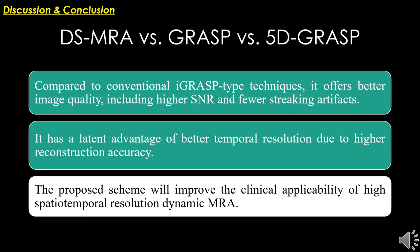Therefore, we can draw the conclusion that, compared to conventional iGRASP-type techniques including GRASP and 5D GRASP, the proposed dual subspace MRI offers better image quality, including higher SNR and fewer streaking artifacts, without temporal resolution loss. It has a latent advantage of better temporal resolution due to higher reconstruction accuracy. In summary, the proposed dual subspace MRI will improve the clinical capability of high spatial-temporal resolution dynamic MRI.